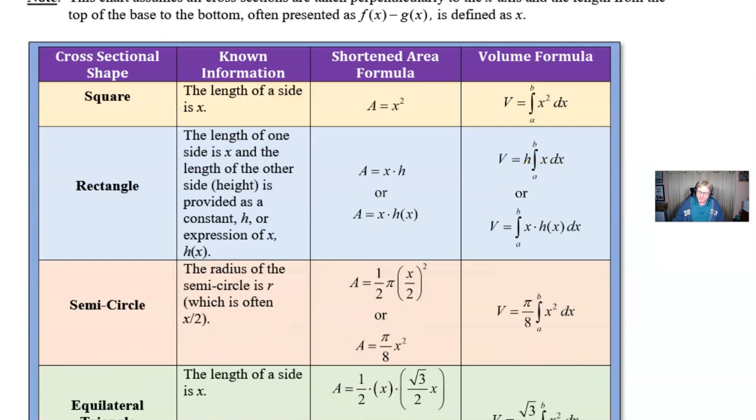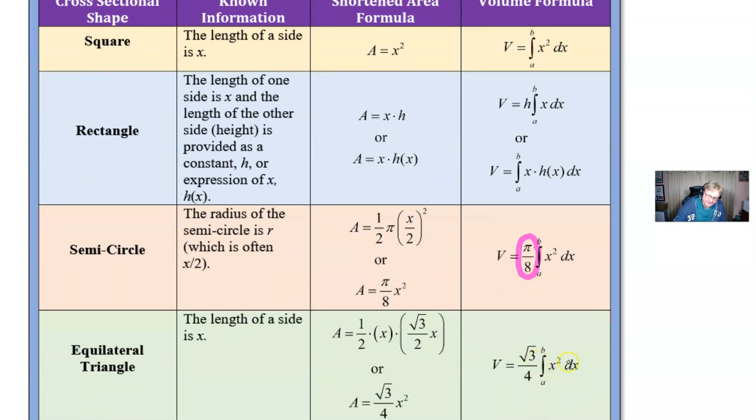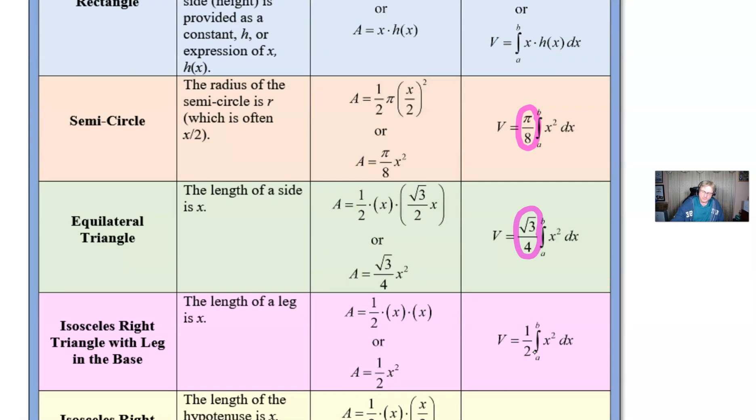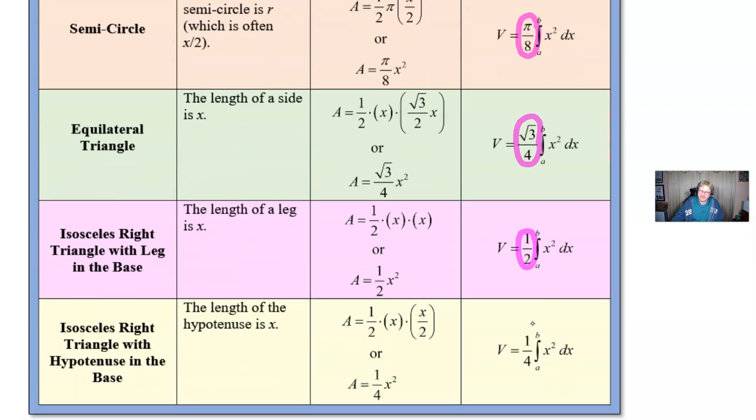What I'm interested in is what happens with the semicircle, as opposed to the original volume of square. And you can see it's just multiplied by pi over 8. Equilateral triangle, same volume, integration of x squared, but we multiply by root 3 over 4. We already talked about isosceles right triangle with a leg in the base as half. This was actually the part E that we just did. And then the isosceles triangle with a hypotenuse in the base, that was part D.